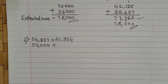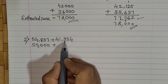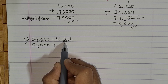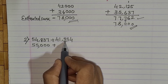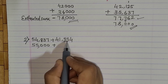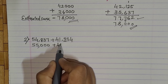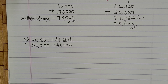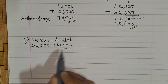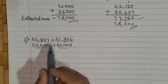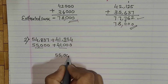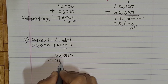Plus — now for the second number, 41,354, we see the digit at the hundreds place is 3. Since it is 1, 2, 3, or 4, we replace the units, tens, and hundreds by 0 and keep the thousands place unchanged. So it becomes 41,000. This is how we round off numbers to the nearest thousand place. Next, we add these rounded numbers to get the estimated sum: 55,000 plus 41,000.